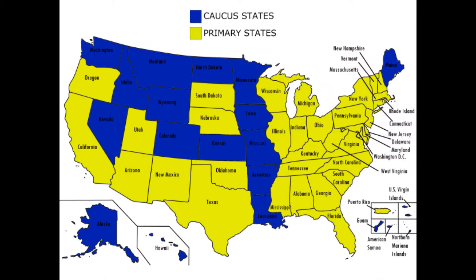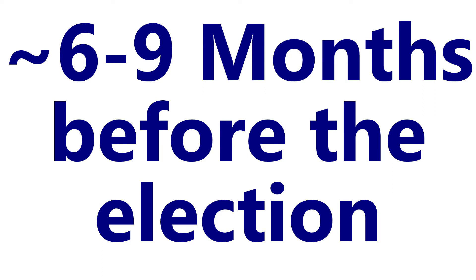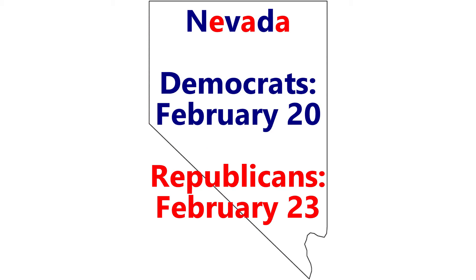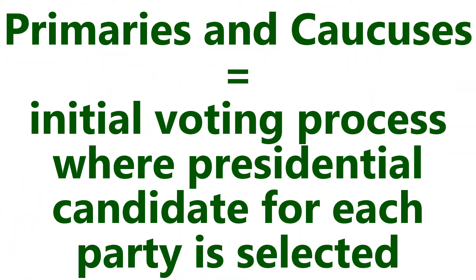First, each state holds a primary or caucus which occurs around 6-9 months before the actual election. The primary or caucus date differs from state to state and can even vary from party to party. Basically, the primaries and caucuses are the initial voting processes where the presidential candidate for each party is selected.